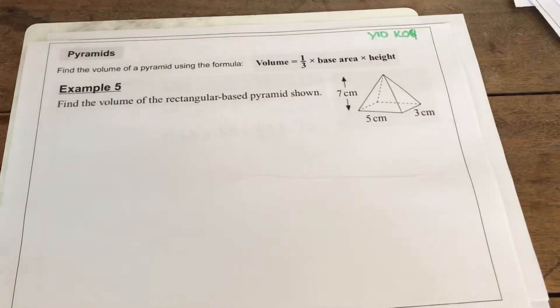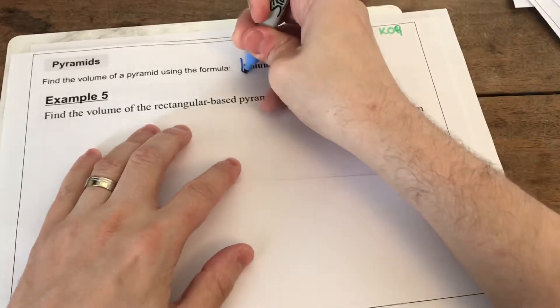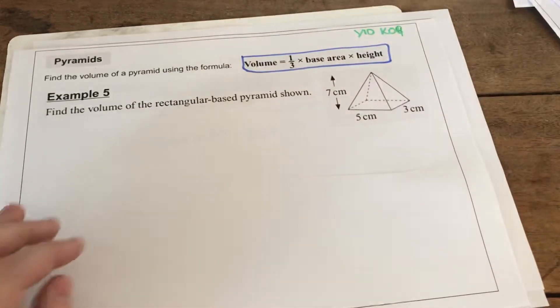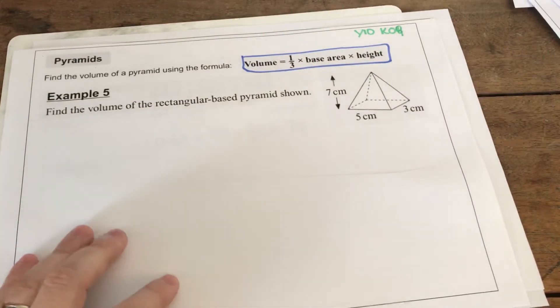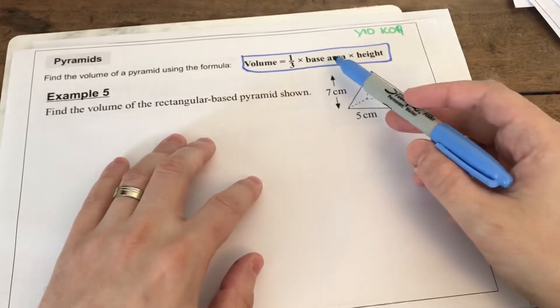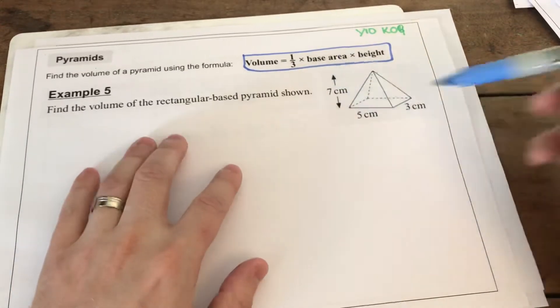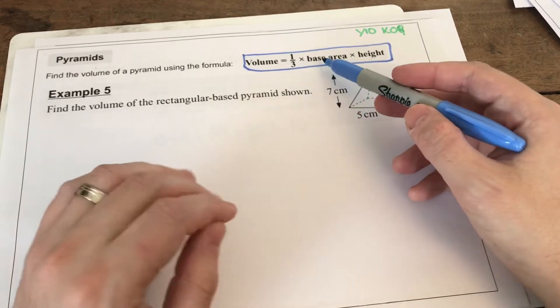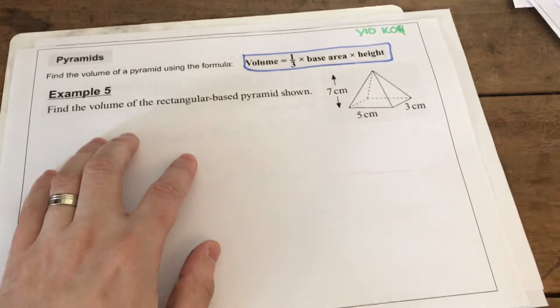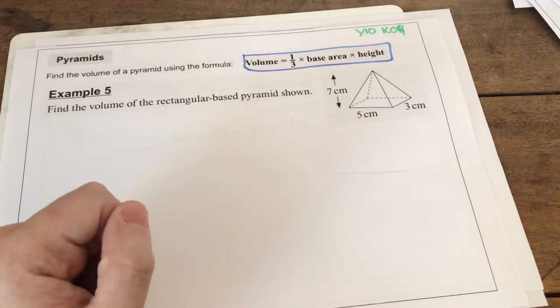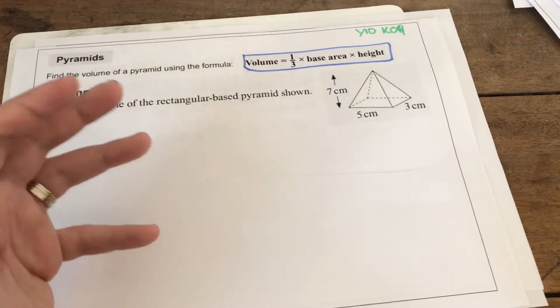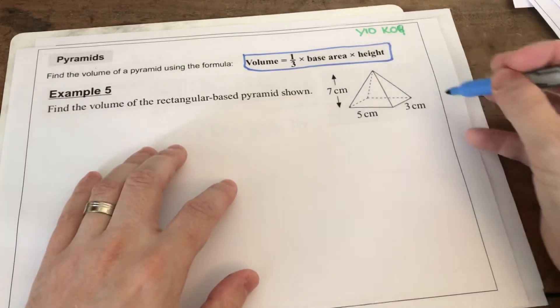If we have a look, what we're going to be doing today is working out the volume of pyramids. The formula for this is seen up here: it is one-third times the base area times height. You've actually seen a variation of this formula when you were working out the volume of a cone, because you were doing one-third times pi r squared, which is the base area of a circle, times by the height. So you're using the same formula again, but this time it will be on different types of pyramids with bases of different sizes or different shapes.